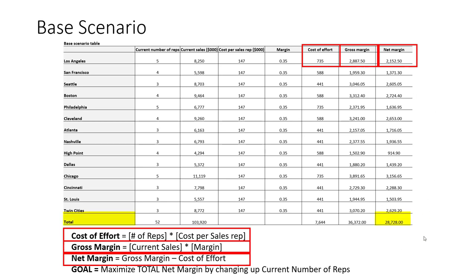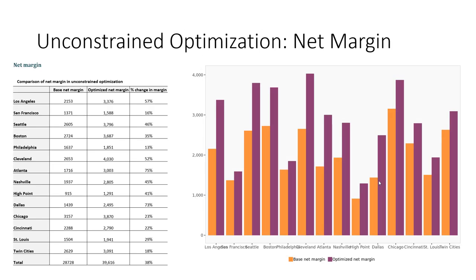Down here is our overall goal, where we want to try to maximize our total net margin by changing the current number of sales reps in the different markets — our inputs. Now let's take a look at the unconstrained optimization solution. Unconstrained means it ignores any global or regional constraints and says what's the absolute best solution. Based on InGenius's output, we can actually move from making about $28.7 million to $39.6 million.